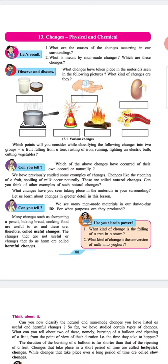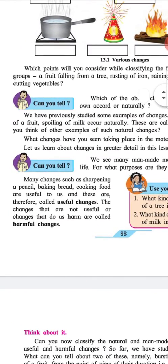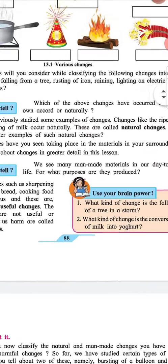Can you tell? We see many man-made materials in our day-to-day life. For what purpose are they produced? Many changes such as sharpening a pencil, baking bread, cooking food are useful to us and thus are called useful changes. The changes that are not useful or changes that do us harm are called harmful changes.